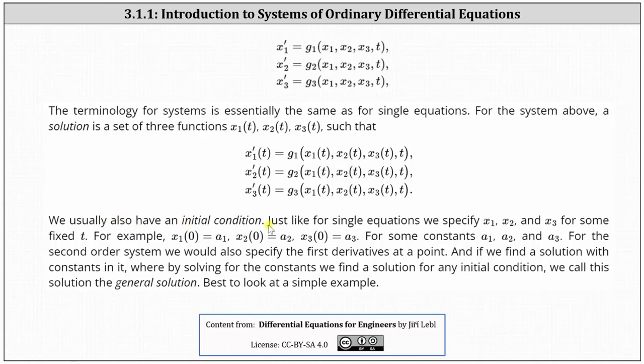We usually also have an initial condition. Just like for single equations, we specify x1, x2, and x3 for some constants a1, a2, and a3. For the second-order system, we would also specify the first derivatives at a point. And if we find a solution with constants in it, whereby solving for the constants we find a solution for any initial condition, we call this the general solution. Let's look at an example.